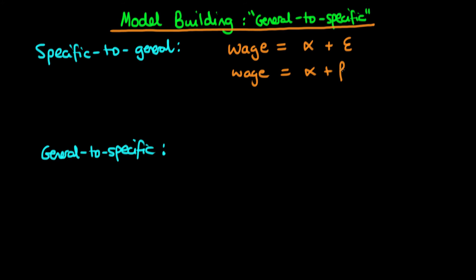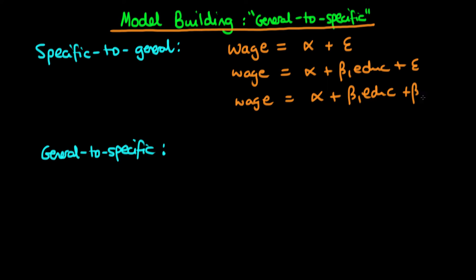Then what we might do is add in a next variable — say, an individual's level of education — giving us wage = alpha + beta1·education + epsilon. If this model represents the underlying economics, in that beta1 is greater than zero and statistically significant, we stick with it and add further variables, such as an individual's level of experience, yielding wage = alpha + beta1·education + beta2·experience + epsilon. We continue adding variables and checking that the model remains congruent with reality and that added variables are statistically significant.